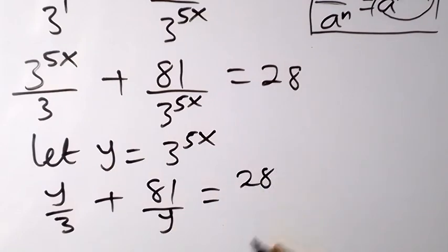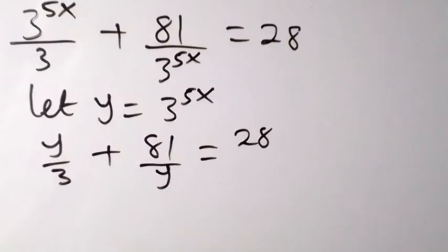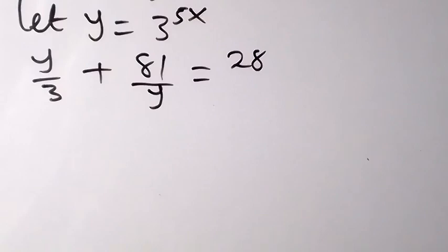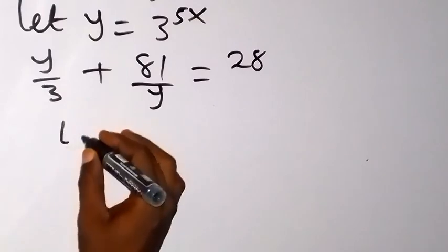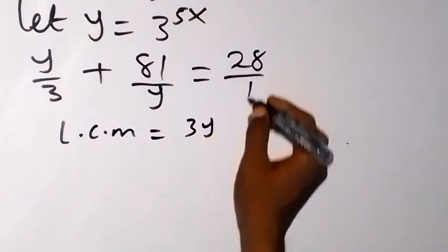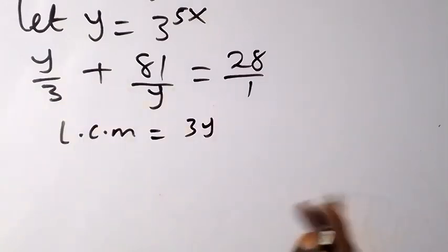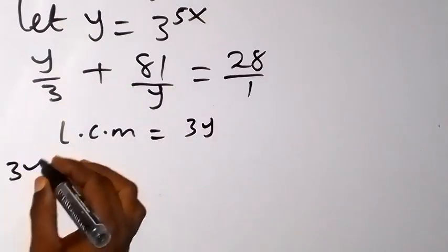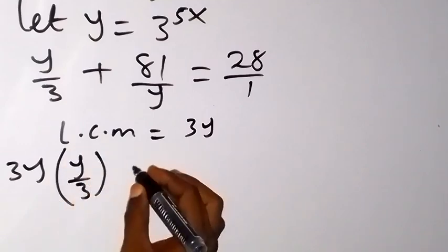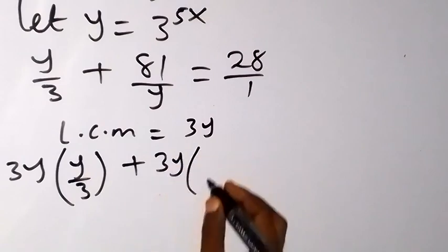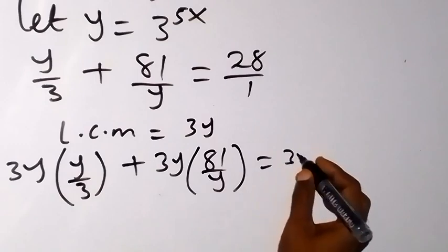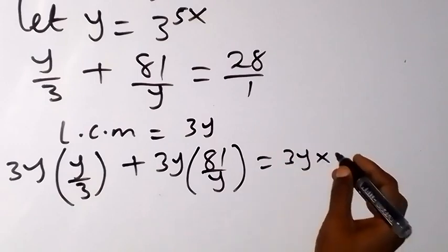Now we can clear this fraction by using the LCM to multiply through. The LCM here is 3y. So we multiply through the equation by 3y: we have 3y multiplied by y over 3, plus 3y multiplied by 81 over y, equals 3y multiplied by 28.